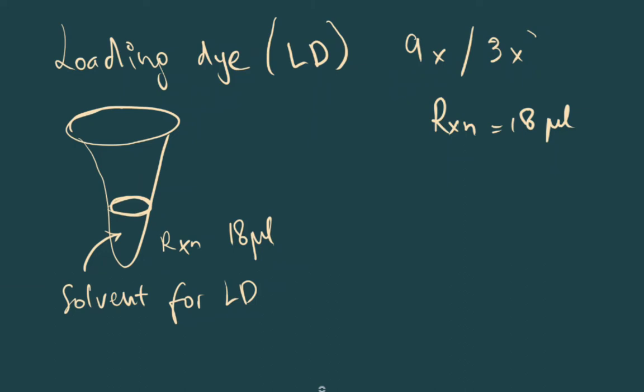In this case also, what we know is that 1/k of this final volume will be occupied by our loading dye, which means (k-1)/k of the volume will be occupied by our solvent.